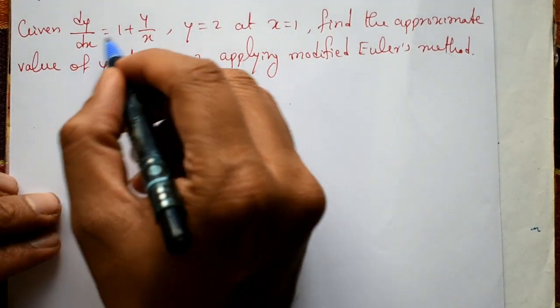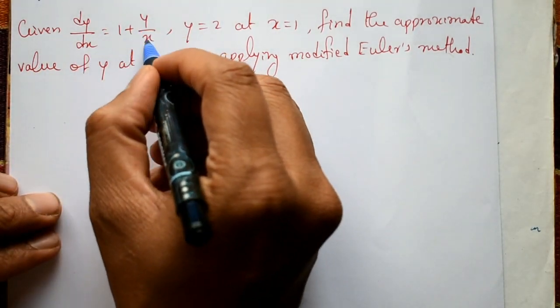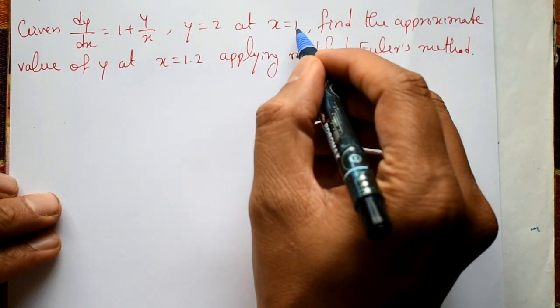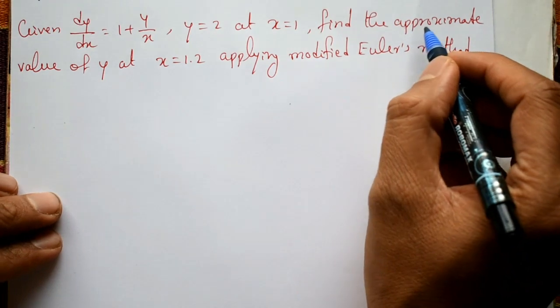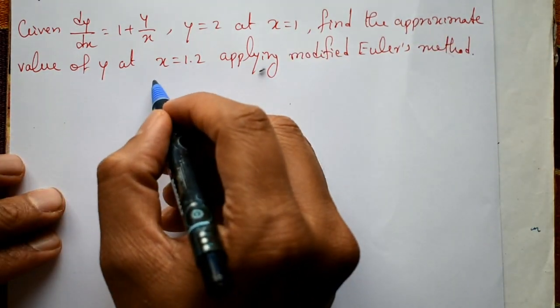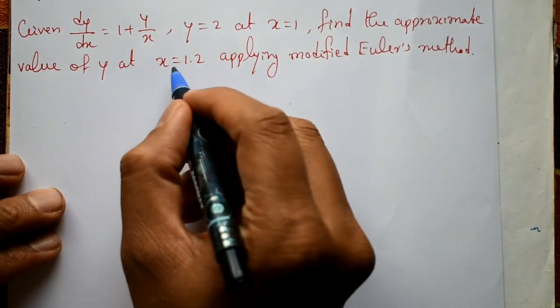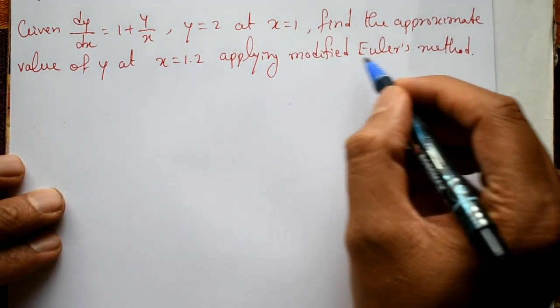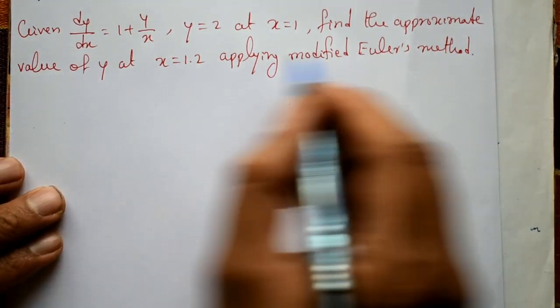Given dy/dx is equal to 1 plus y by x, y equal to 2 at x equal to 1. Find the approximate value of y at x equal to 1.2, applying the Modified Euler's method.